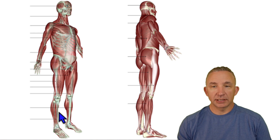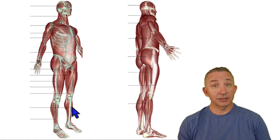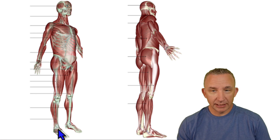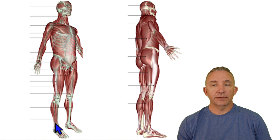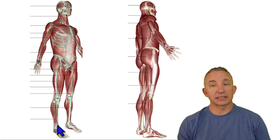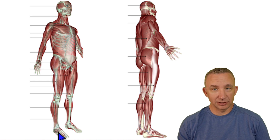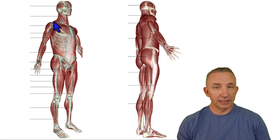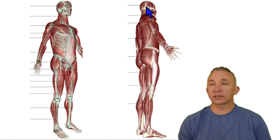Coming over to the tibial side, on the anterior side we call it tibialis anterior. Then we get down to our extensors — one of our extensors is extensor digitorum longus. We'll also learn extensor hallucis longus, because they're extending the digits and the big toe. That's a look at the anterior side as we go to the posterior side.